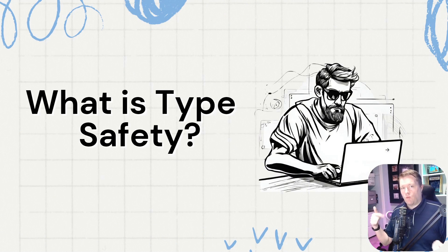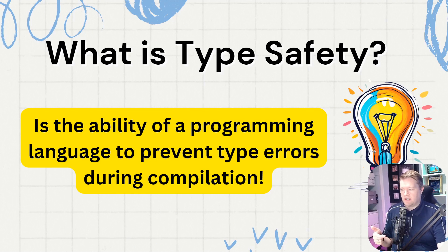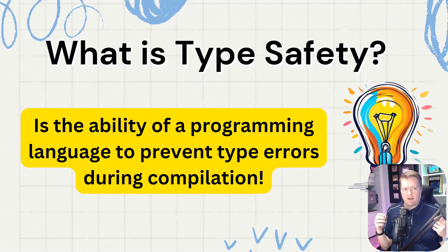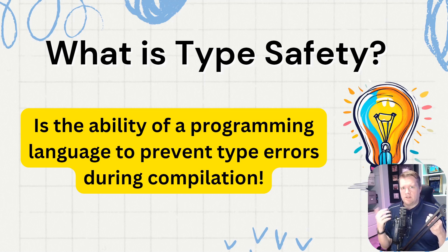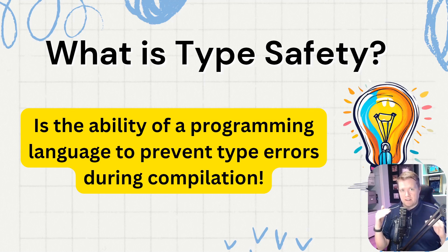I want to explain what type safety is and why you should use it. It's the ability of a programming language to prevent type errors during compilation. If you've used languages like C# and Java, which are strongly typed languages, this is going to be very familiar. It's the idea that when you declare variables, you have types on them — like integers, strings, or more complex types with multiple pieces of information.